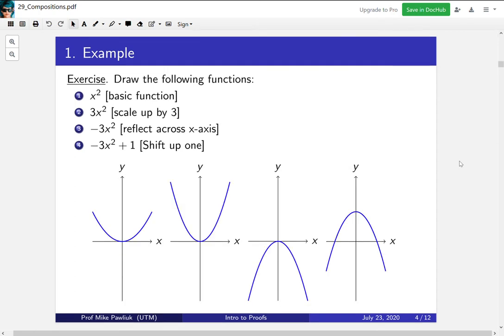This is an exercise from high school. We'll draw x², and then to draw 3x², you scale everything up. To take -3x², you reflect it across the x-axis, and adding +1 shifts it up vertically one unit.